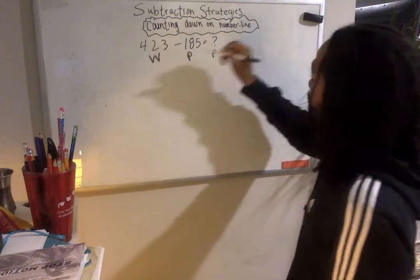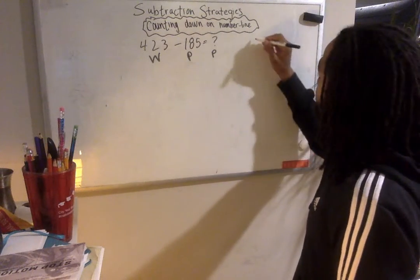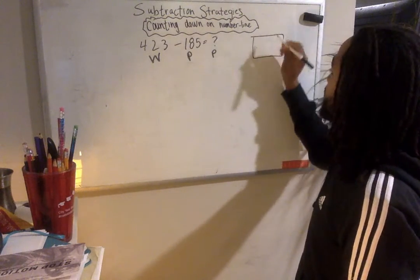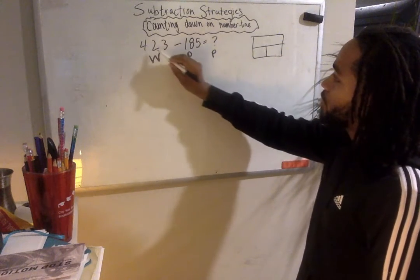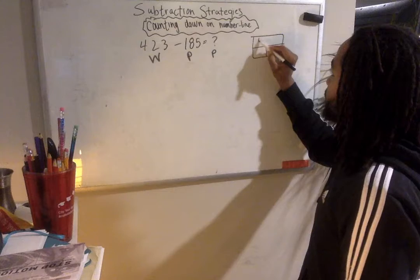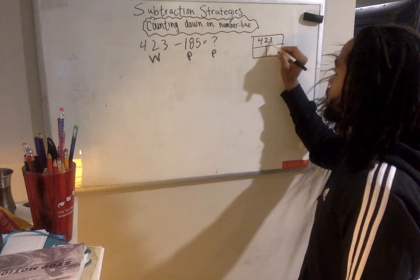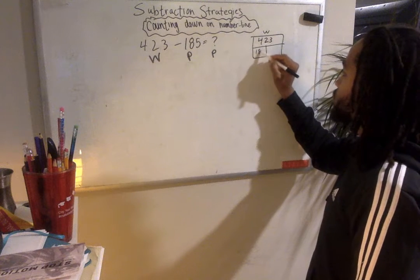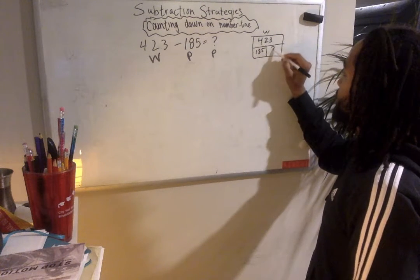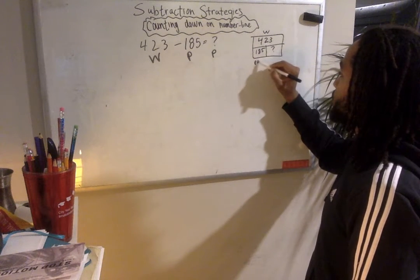As I said, this is subtraction. We're going to use a number line, but I'm going to show why this part-part-whole is really helpful too. 423 is the whole. It's the larger number. 185 is a smaller number and I have to find this other part. So this is a part,